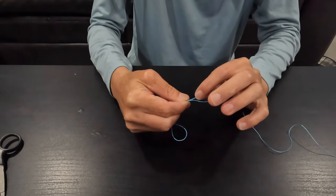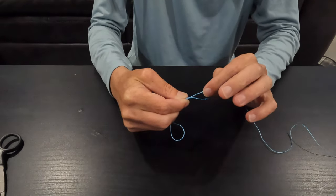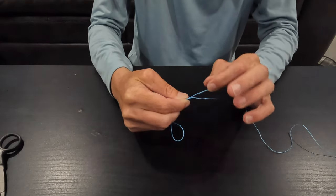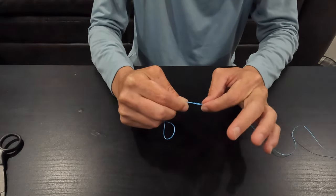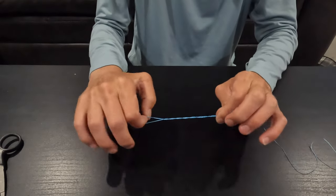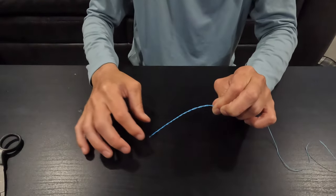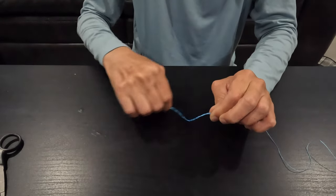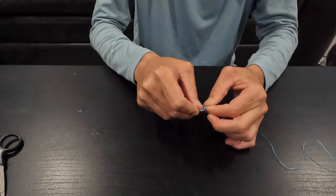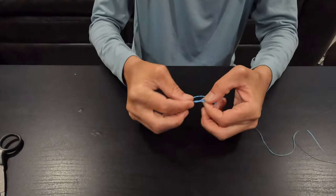And the end of our loops that we just did, or our twists that we just did right here. Now I'm going to hold these two together and do a very simple overhand knot. Pull that nice and tight. Make sure it's all nice and even and it should look like the finished product. We're going to do our overhand knot. Very simple.